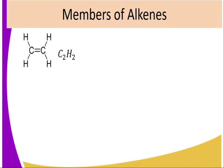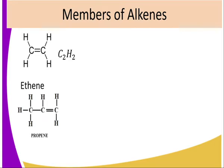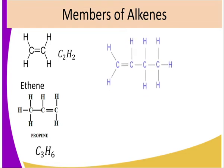So who are the members of Alkenes? The first member is Ethene. They have the suffix E-N-E and the prefix comes from the Greek, where meth, eth, prop represent the number of carbons within the structure. Member number two is Propene — that is, we have three carbon atoms and we have a double bond which can be at any of the carbons within the chain, with a molecular formula of C3H6.